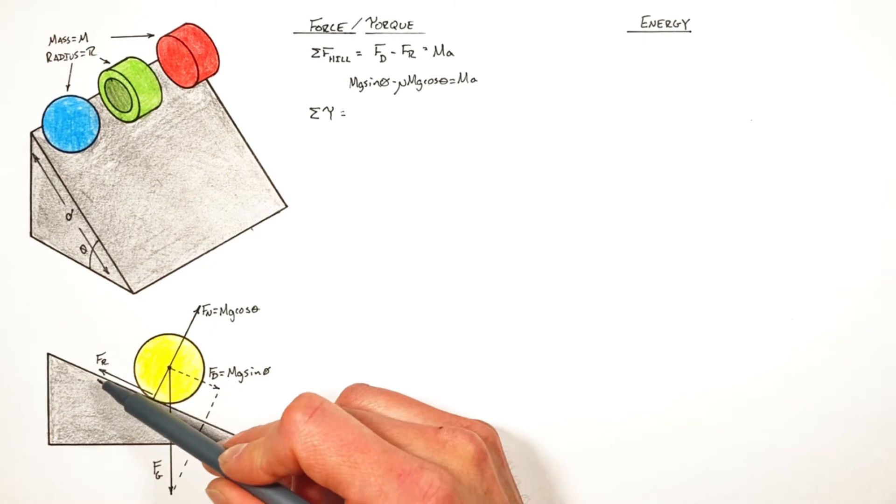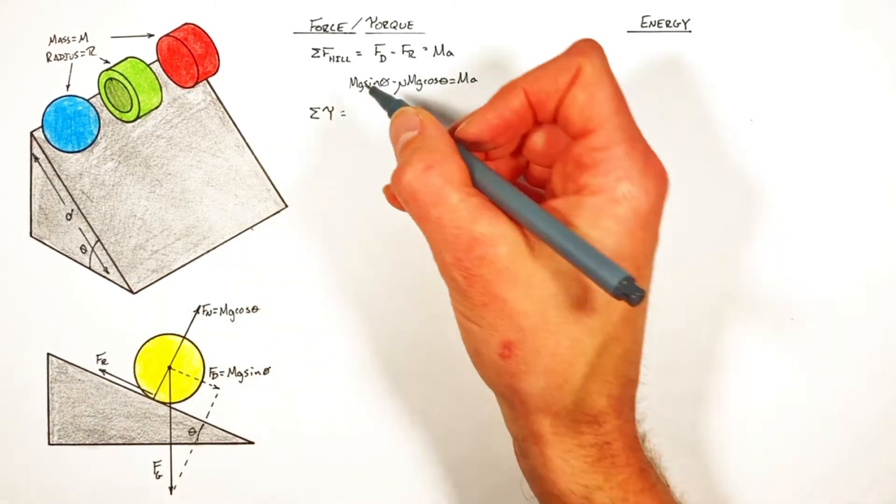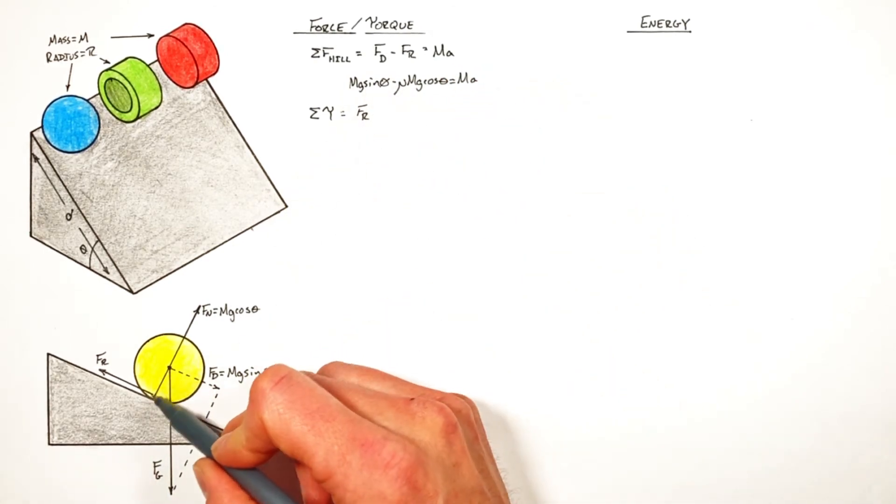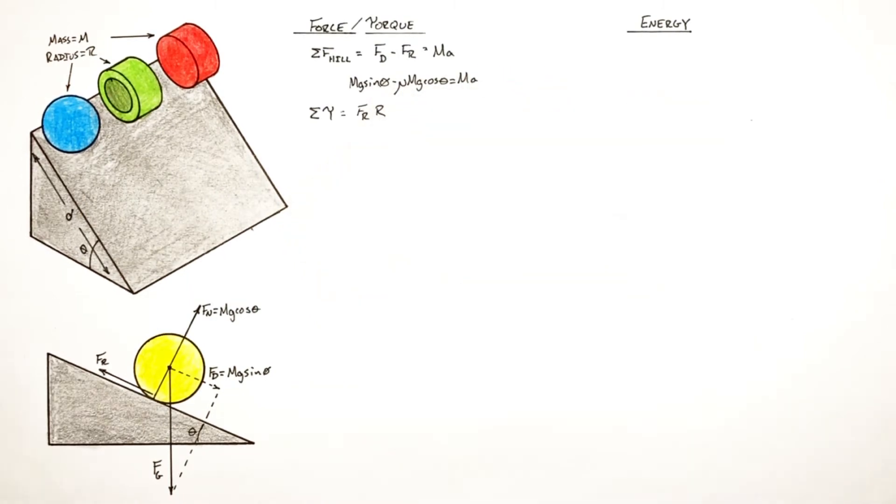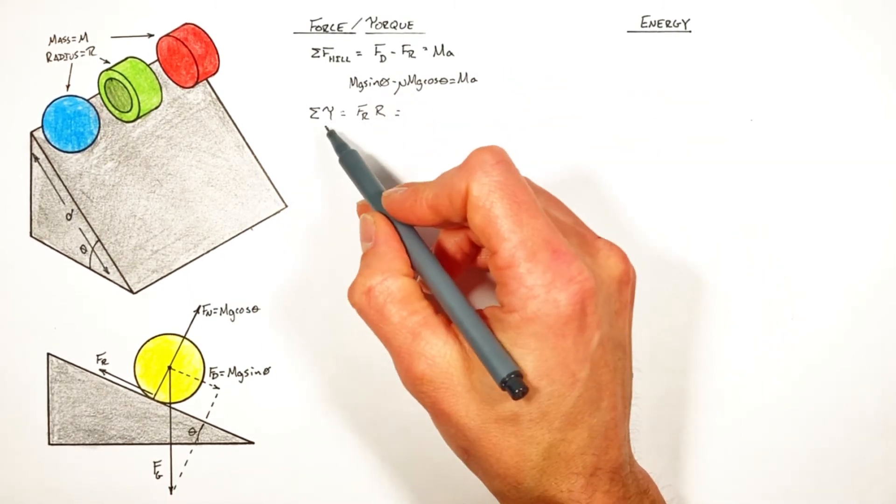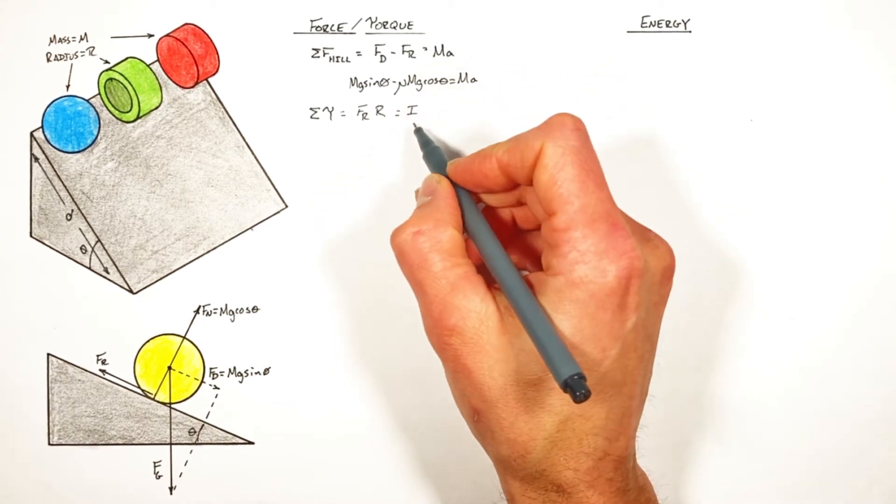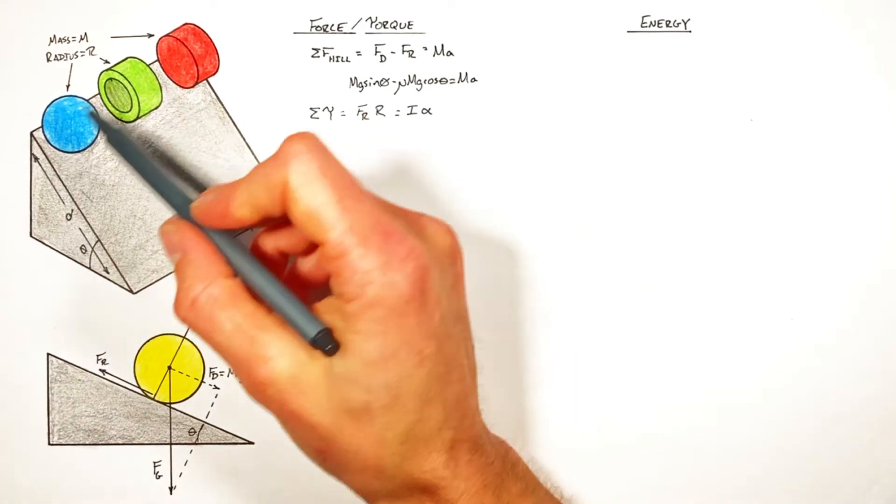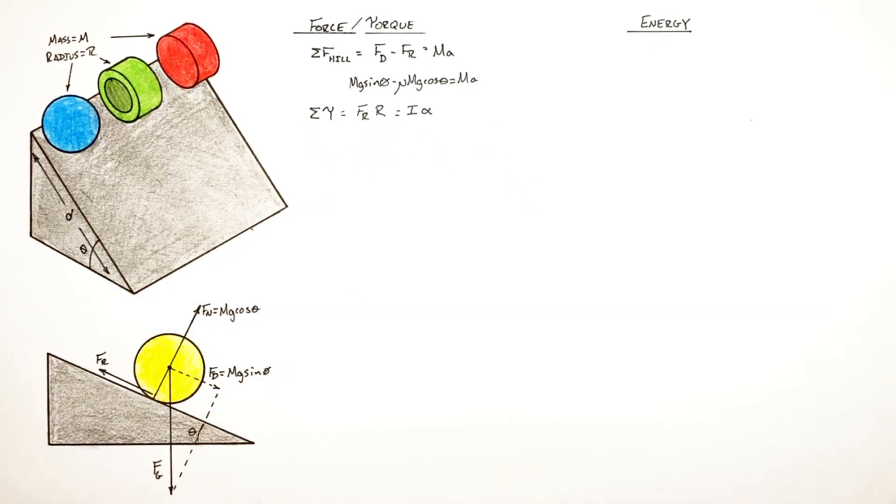Now the only force that's actually producing any torque on this rotating object is the friction force. It's that friction force which is acting at a radius, which we decided up here we're going to call r. Now you'll remember torque causes an object with some rotational moment of inertia i to experience an angular acceleration alpha. Now each of these three different objects has a different rotational moment of inertia.